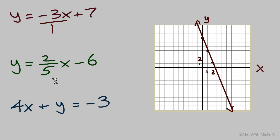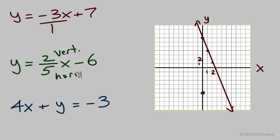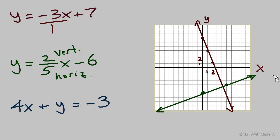Our next equation is also already solved for y. The y-intercept is at negative 6. Now our vertical change is a positive 2 for each horizontal change of positive 5. So from this intercept, we will go up 2 and to the right 5 — up 2 over 5. And now we have our graph for the second equation.